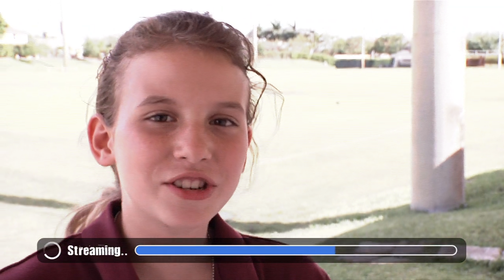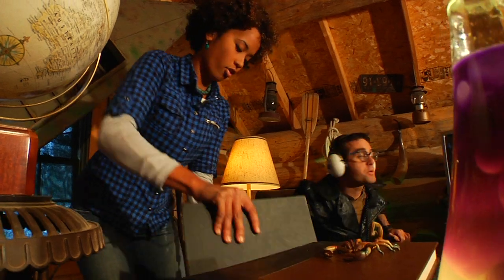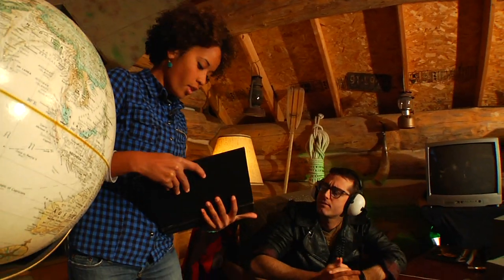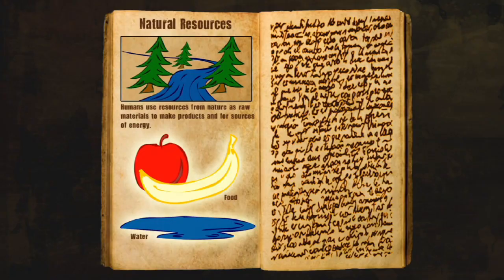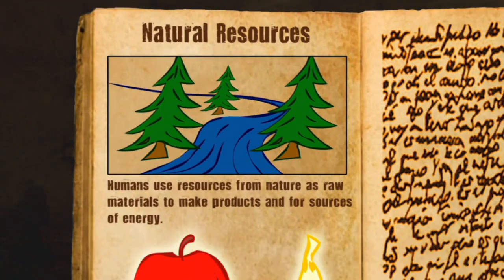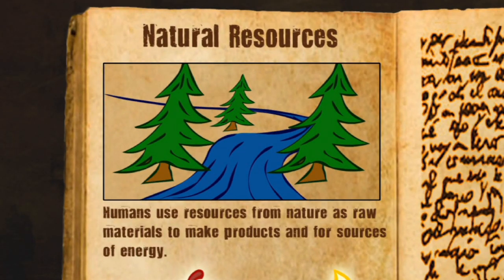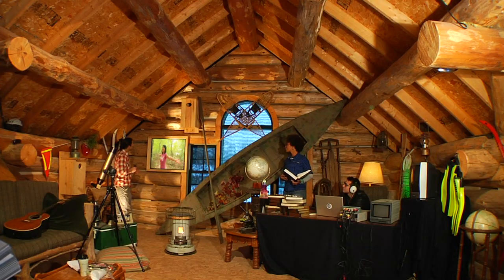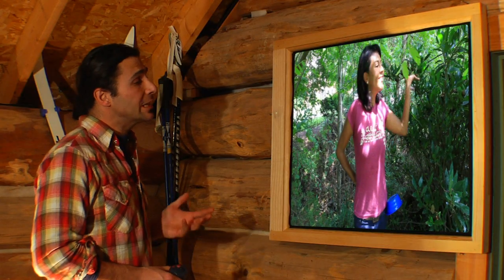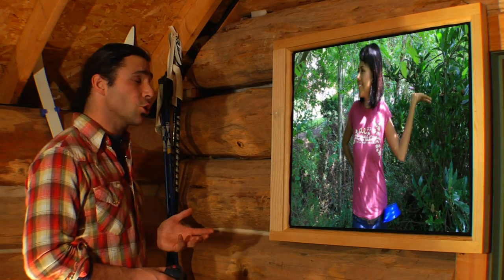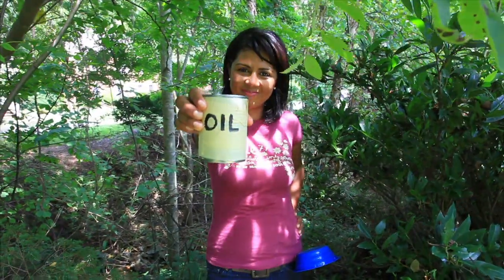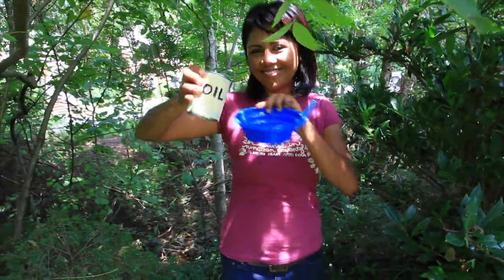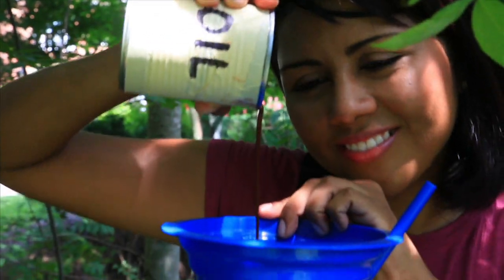Hi, I'm Katrina. What's a natural resource? Alright, everyone to stations. Danny, what do you have? Humans use resources from nature as raw materials to make products, and for sources of energy like food and water. Most resources are either renewable — meaning they can be naturally replaced in a short period of time — or non-renewable, which means they exist in limited amounts or are used much faster than they can be replaced in nature.